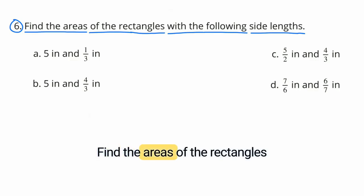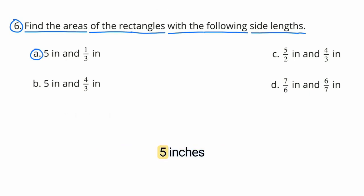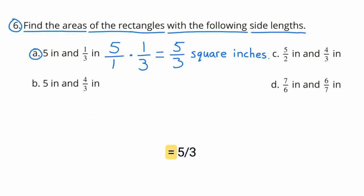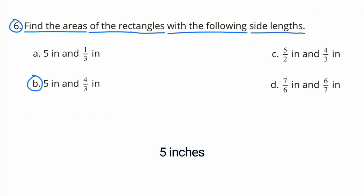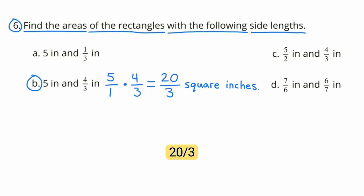Number 6: Find the areas of the rectangles with the following side lengths. A: 5 inches and 1 third inches — 5 over 1 times 1 third equals 5 thirds square inches. B: 5 inches and 4 thirds inches — 5 over 1 times 4 thirds equals 20 thirds square inches.